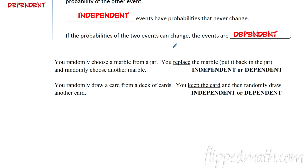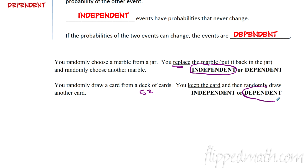Independent events have probabilities that never change from event to event. If the probabilities can change, then the events are dependent. Example: randomly choosing a marble from a jar and replacing it — independent. Drawing a card from a 52-card deck and keeping it, then drawing again — dependent, because now there are only 51 cards left.